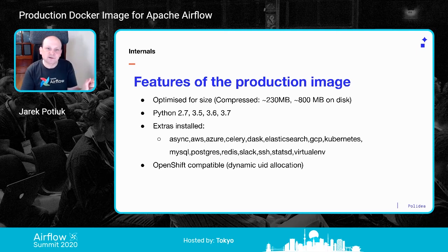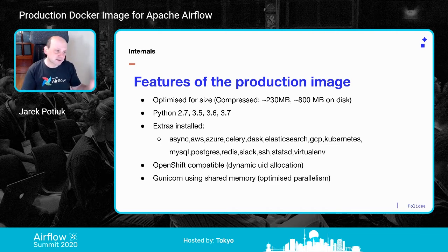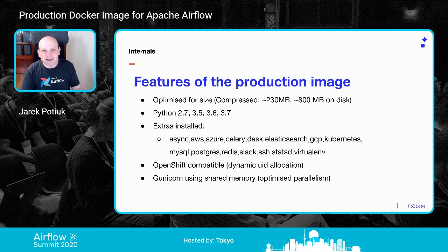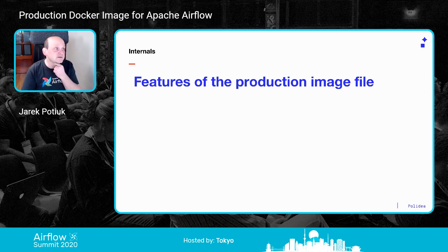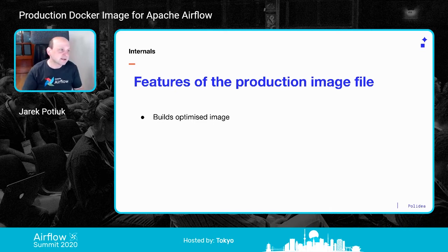OpenShift is Red Hat's — now IBM's — Kubernetes-based platform to run containers. The image also has some optimization of parallelism for Gunicorn using shared memory, which is a nice property allowing more parallel web server threads. Regarding the image file features: it builds an optimized image — size is the most important criterion. It's also highly customizable; every piece is customizable via build arguments. I started from scratch and made it really customizable.